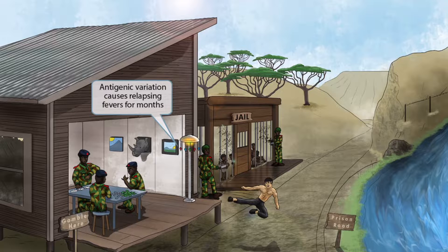Now look at this cool lamp hanging here. The heating nature of the lamp represents fever, and you can also see these assorted gems hanging from the fancy lamp. We use gems to represent antigens. This varied assortment of gems represents antigenic variation, and due to the antigenic variation created by Trypanosoma species, the fevers can go away but then return later. Trypanosoma causes antigenic variation, which leads to relapsing fevers over several months.